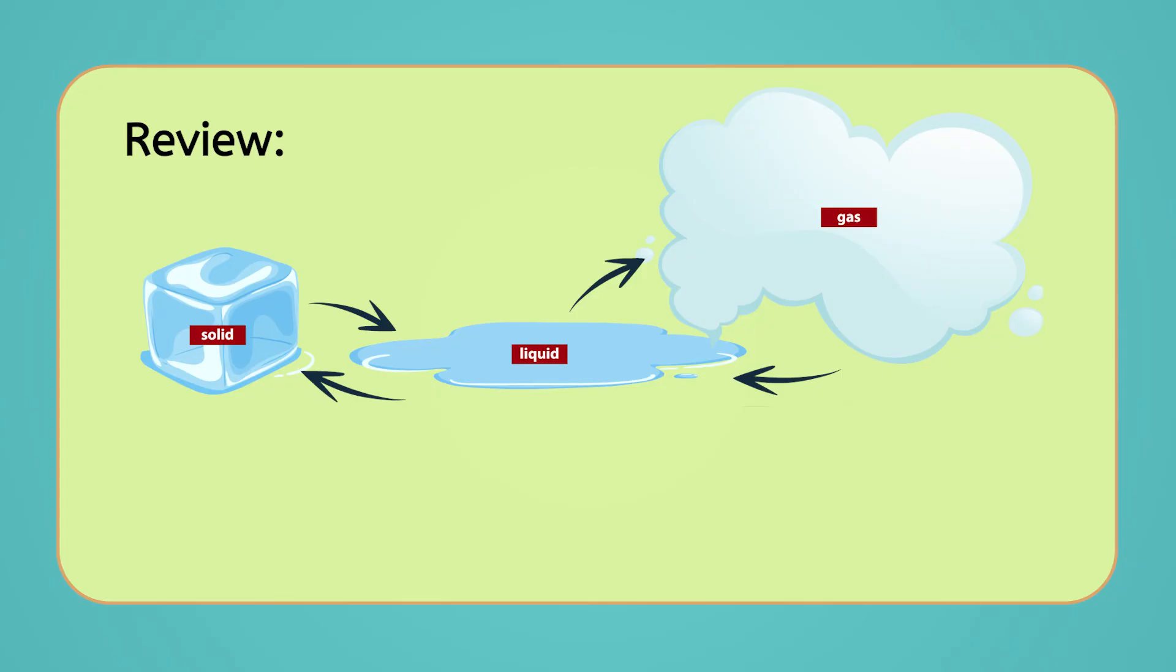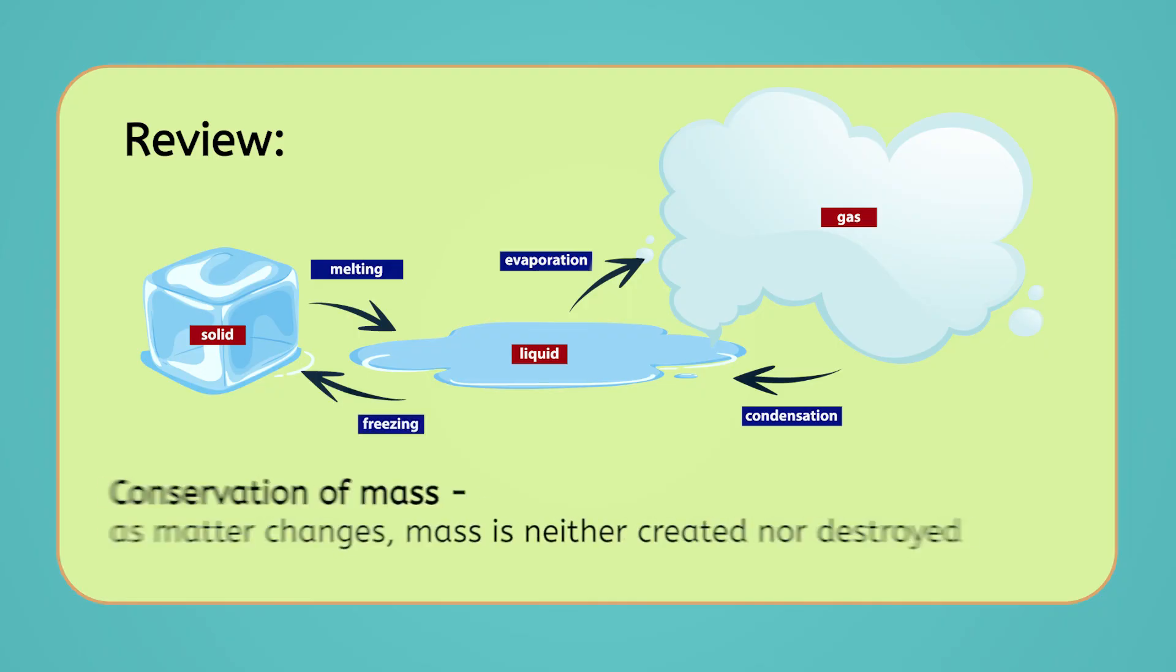With the addition of heat, solids melt to become liquids, and liquids evaporate or boil to become gases. With the removal of heat, gases condense to become liquids, and liquids freeze to become solids. Throughout all of this, no matter is destroyed and no new matter is created due to the law of conservation of mass.